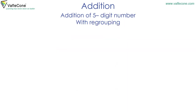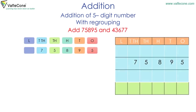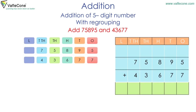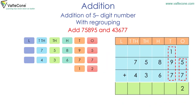Addition of five-digit numbers with regrouping. Add seventy-five thousand eight hundred ninety-five and forty-three thousand six hundred seventy-seven. We start adding from the ones place. Five plus seven is equal to twelve, or one ten and two ones. So placing two at the ones place and one at the tens place. We add at the tens place: nine plus seven plus one is equal to seventeen, or one hundred and seven tens. We place seven at the tens place and one at the hundreds place.